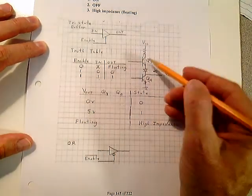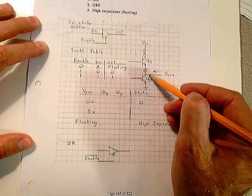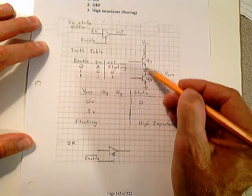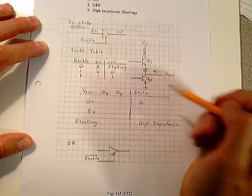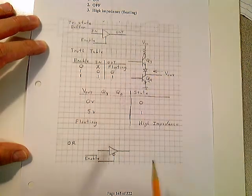That's called high impedance because with this off and this off, looking back in here, you have real high impedance to ground. This is an open circuit to VCC, and it's an open circuit to ground. That's called high impedance or high resistance state. That's how they work.